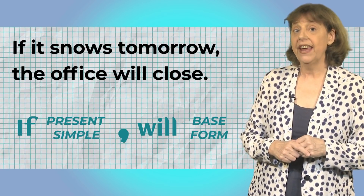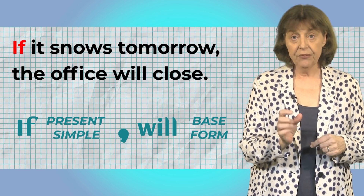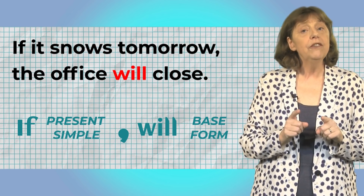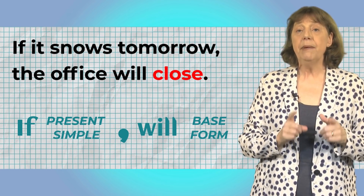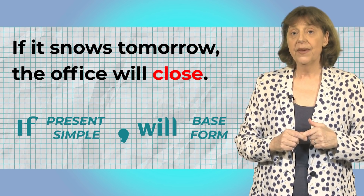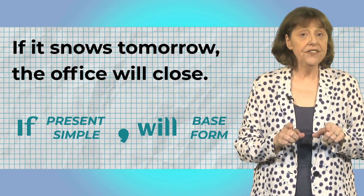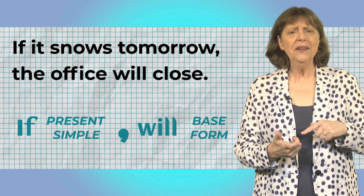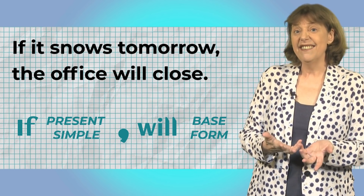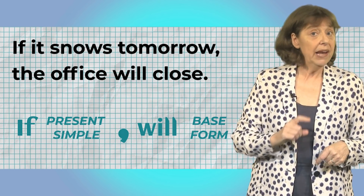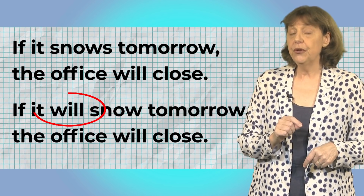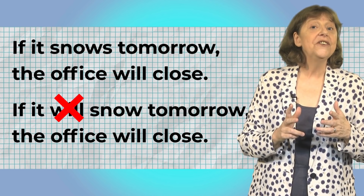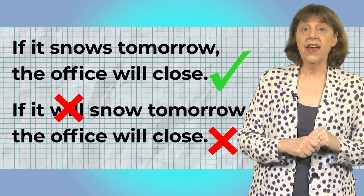Let's look at the verb forms here. We have 'if' and then the present simple tense, and then the modal verb 'will' and the base form of the verb. Notice we use the present tense in the if clause. So we're talking about the future, but we're using the present tense. In some languages you can use a future form here, but not in English. This sentence is wrong, so don't make this mistake.